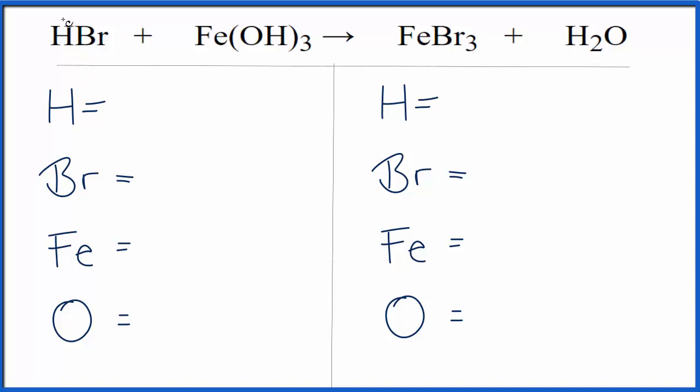On the reactant side, we have hydrogen, one of those, plus three times this one here. That gives us three more. So we have four hydrogen atoms. Bromines, we have one. Irons, one. And this three applies to everything here. Three times the one, we have three oxygens.